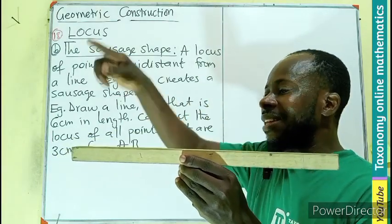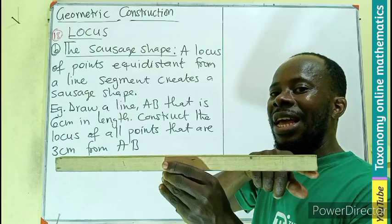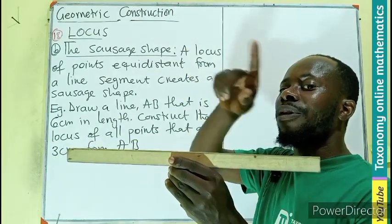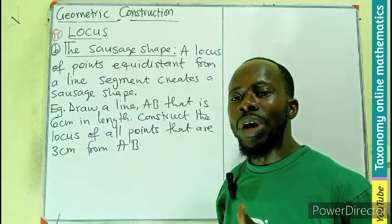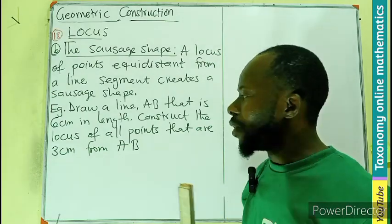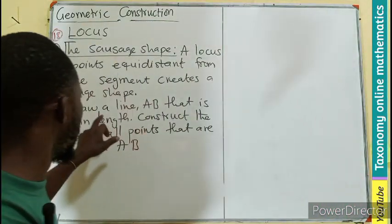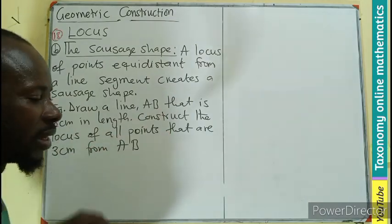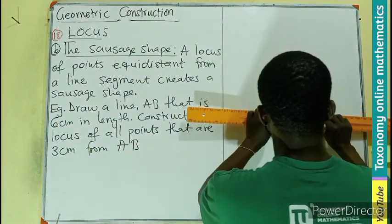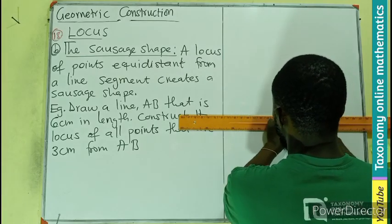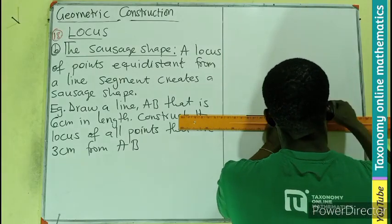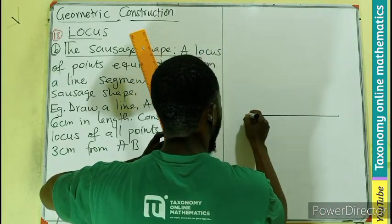If we can be able to put all together, that will give rise to a sausage shape. So let's deal with that. The first thing is to construct the line segment of six centimeters. Let me draw my line segment.